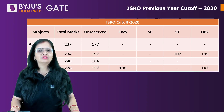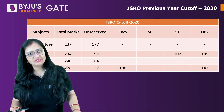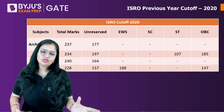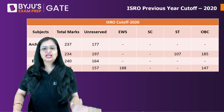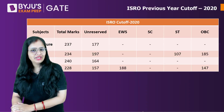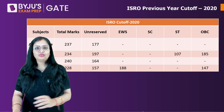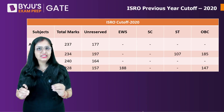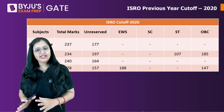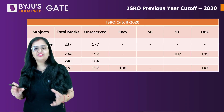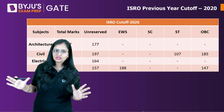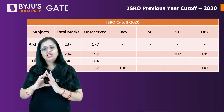For Civil, the total was 234 marks. The unreserved cutoff was 197, ST was 107, and OBC was 185. You have to attempt a decent number of questions from Civil. Similarly, for Architecture, Electrical, and RAC (Refrigeration and Air Conditioning), you can go through this chart to see the cutoffs.